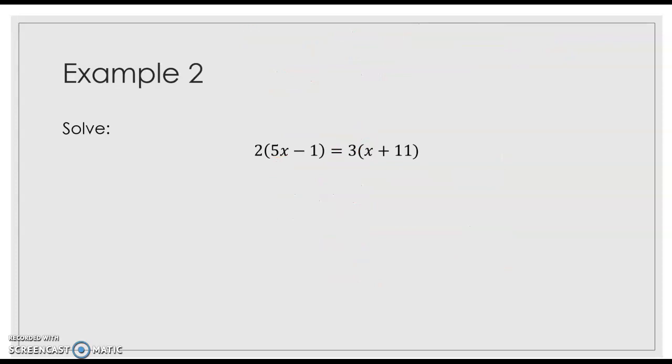Moving on. Example 2. Let me turn my page over here. We ask ourselves those 3 questions. First off, I know this is my given. First question, do I need to distribute? And the answer for that is yes. So, we're going to distribute. Actually, we've got to distribute twice. We've got to distribute the 2. And then we've got to distribute the 3. So, now I've got 10x minus 2 equals 3x plus 33. So, I use that distributive property.